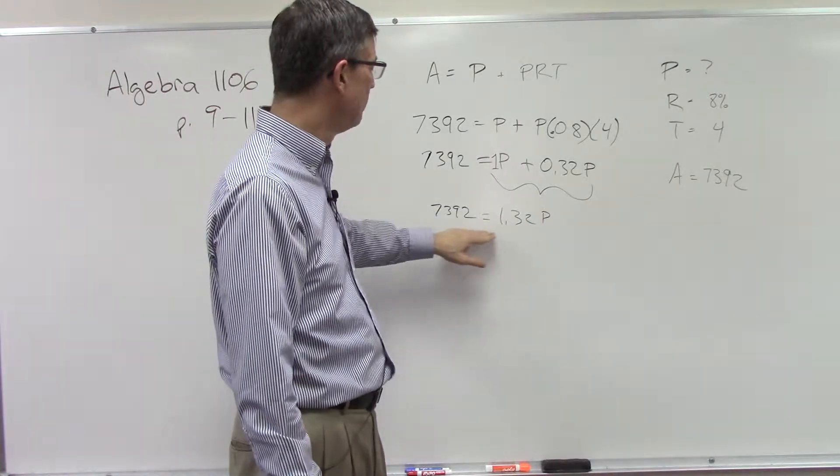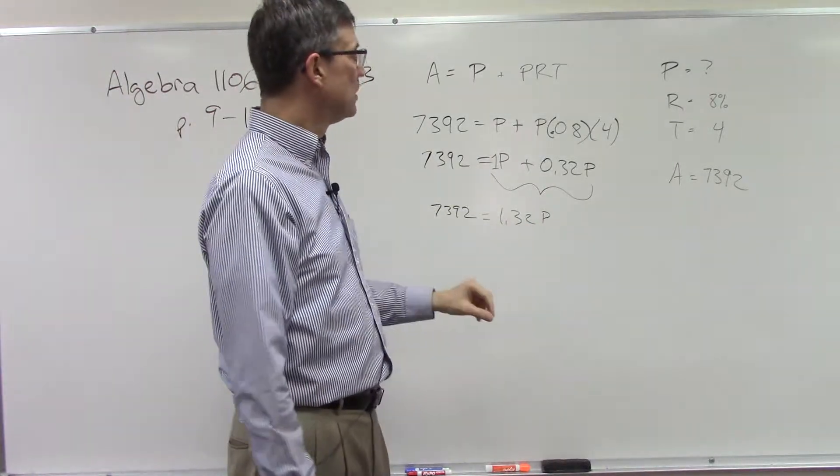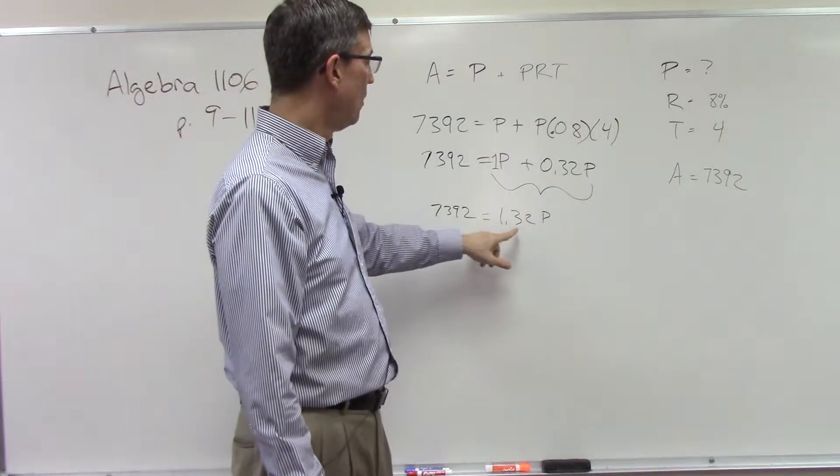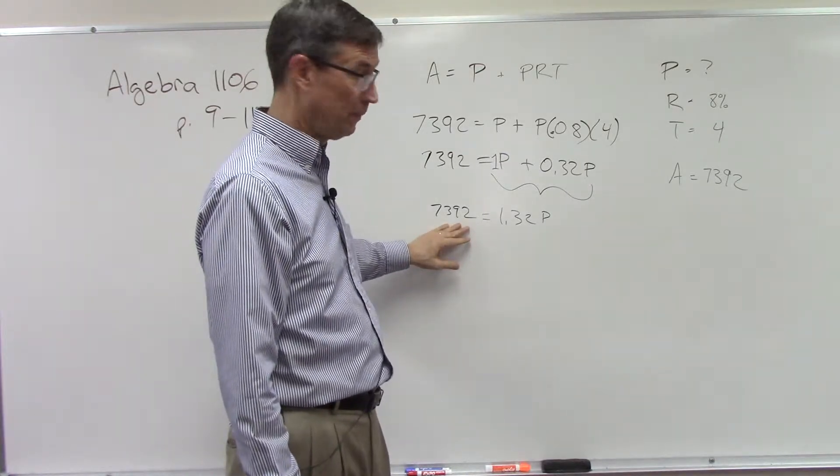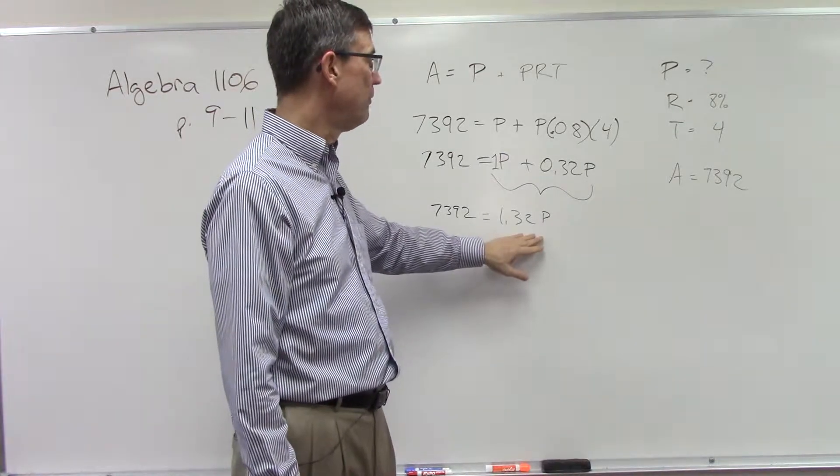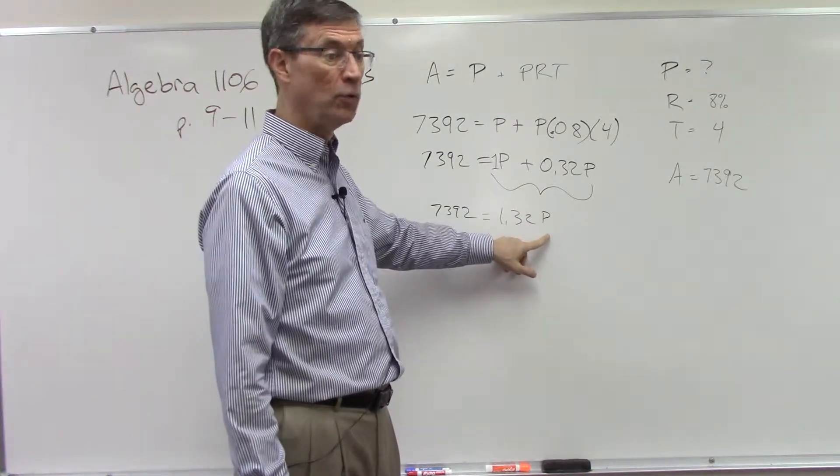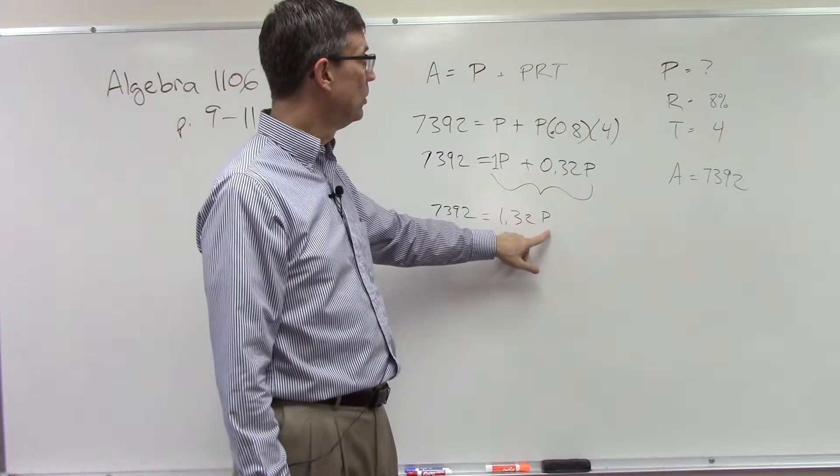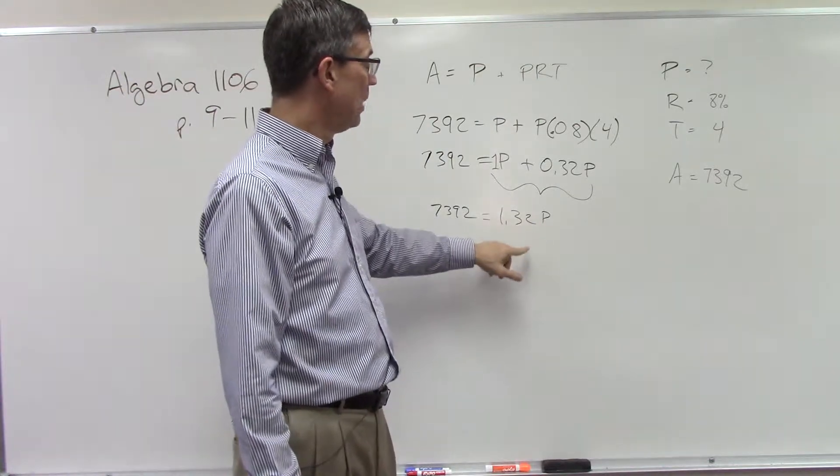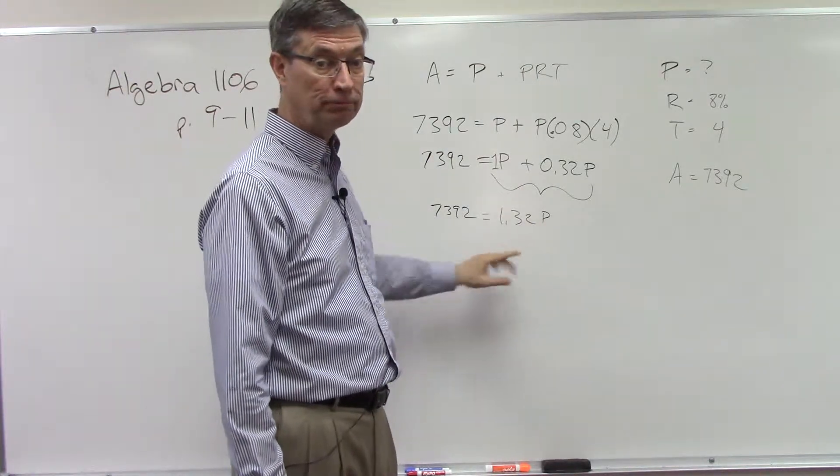You're solving for P, so you're going to divide both sides. Sometimes I find students always think that they have to divide by the number on the left. That's not true. You're dividing by whatever is being multiplied times the variable that you're solving for. Here, P is on the right, so I need to divide by 1.32. Do the same thing on the other side.